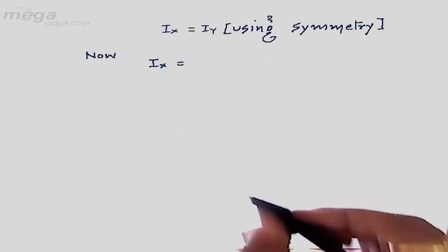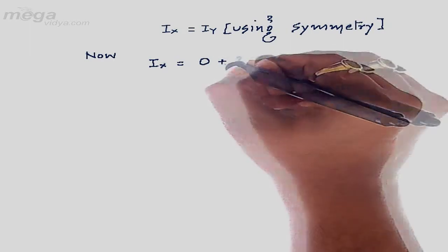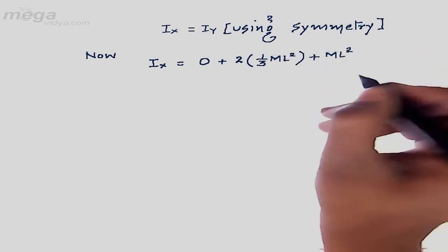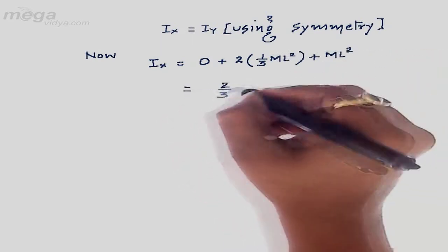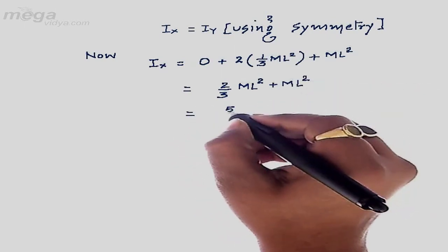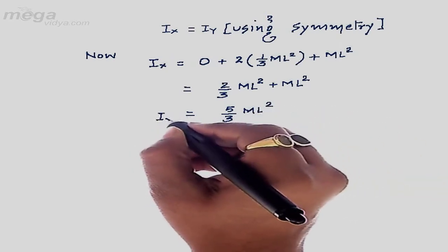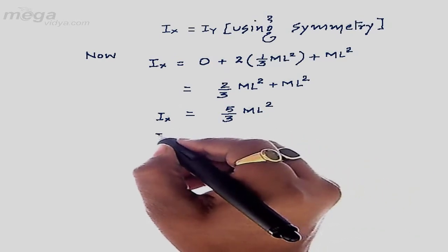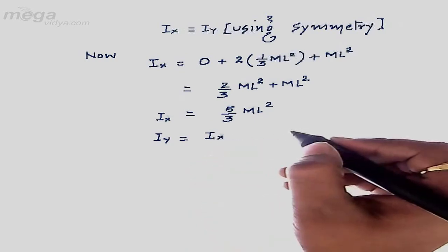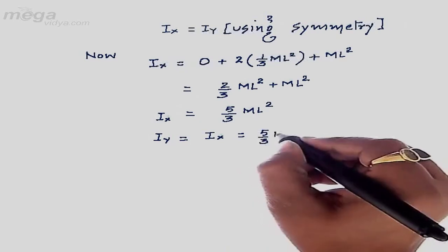So we can say Ix is equal to 0 plus 2 × (1/3)ml² plus ml², which equals (2/3)ml² + ml², giving a value of (5/3)ml². This is the moment of inertia along the x-axis. Using the symmetric relationship, the moment of inertia along the y-axis is also equal to (5/3)ml².